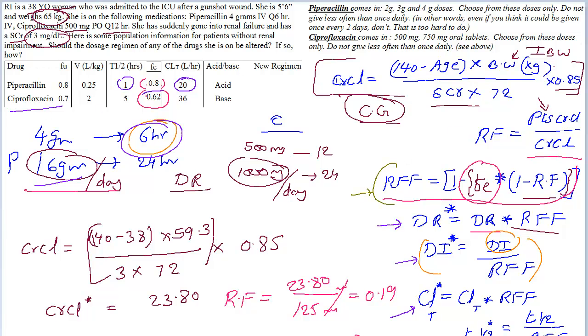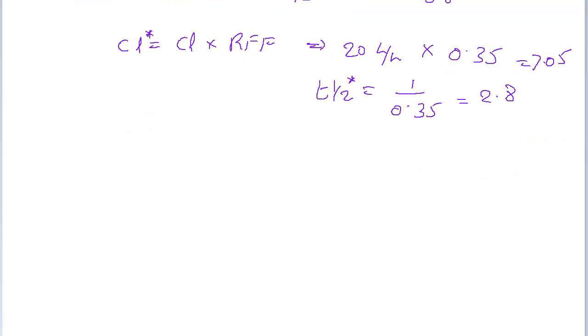The same formulas which we're going to use for everything. And the first step is we have to calculate the renal fudge factor. For ciprofloxacin is 1 minus Fe times 1 minus RF.